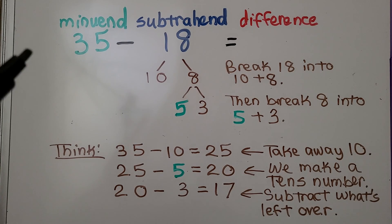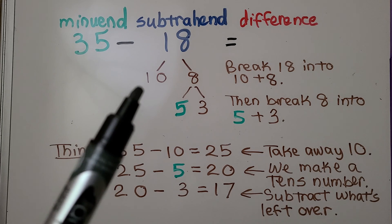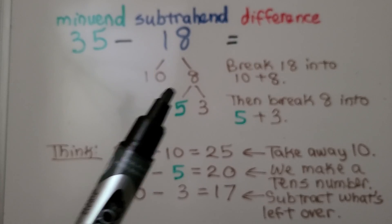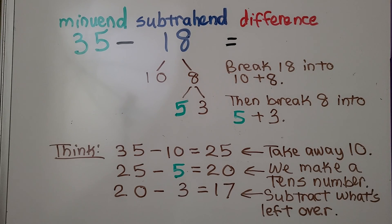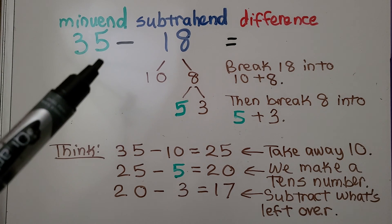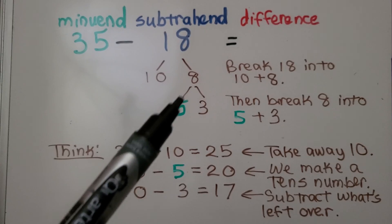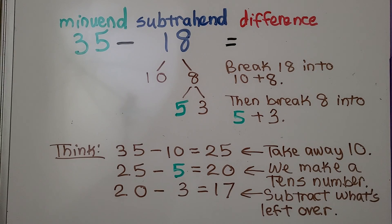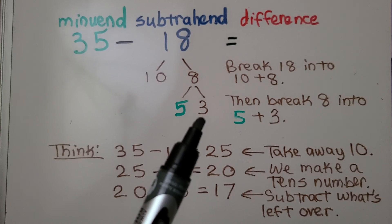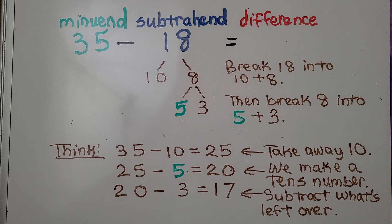35 is our minuend; 18 is our subtrahend. What we do to break apart the subtrahend is we break it into a 10 and an 8, because 10 plus 8 is equal to 18. Then we look at the ones place in the minuend. Because there's a 5 here, we know when we break apart the 8, one of the add-ins will be a 5, and we need 3 more to make an 8, so we have a 5 and a 3.